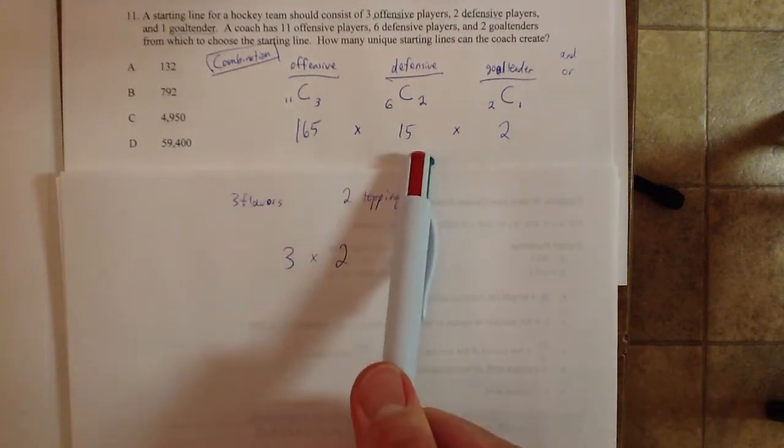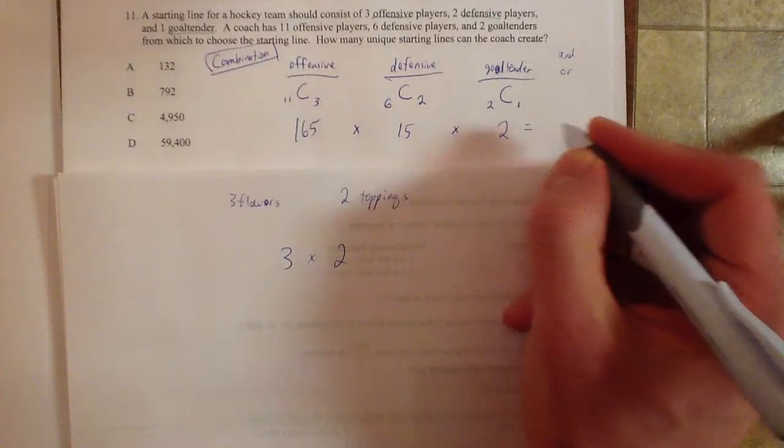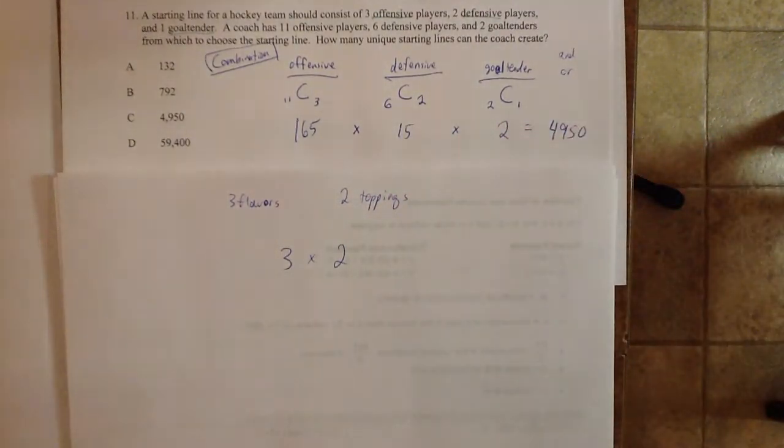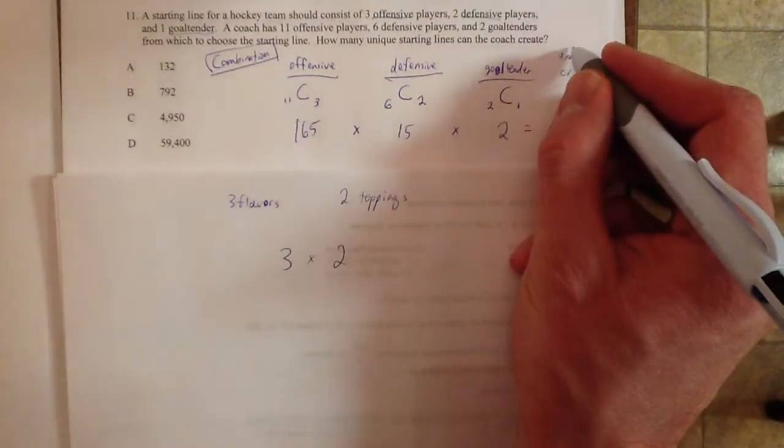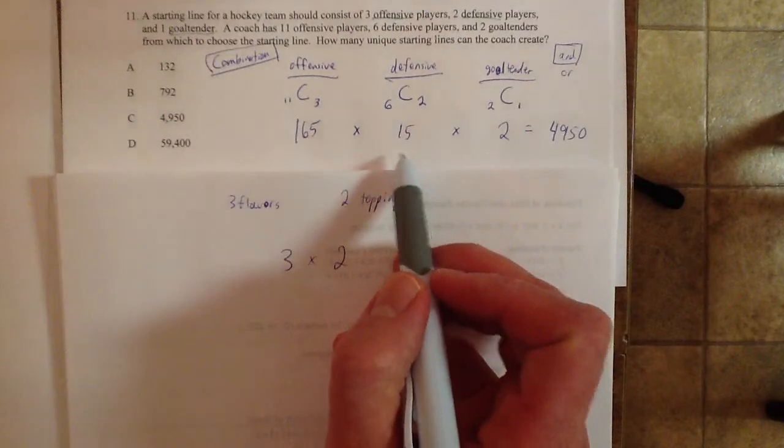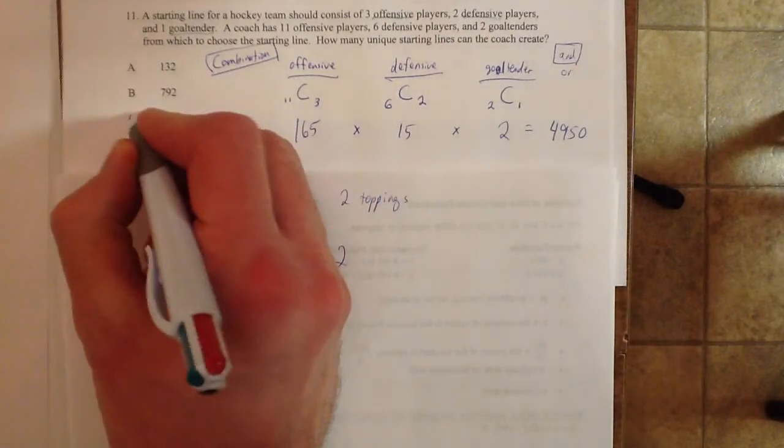I have 165 options here, 15 options here, and two options here. And when I multiply them, I get 4,950. So it was an 'and' problem. I'll do this, and I'll do this, and I'll do this. And there it goes.